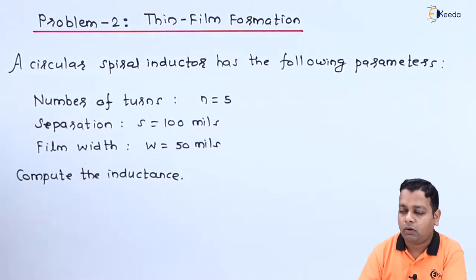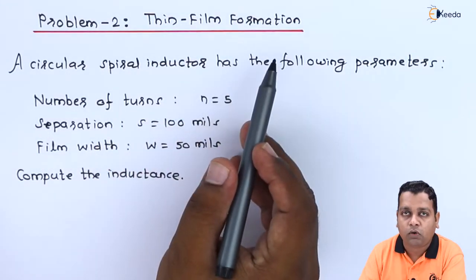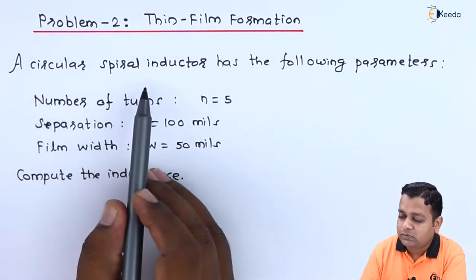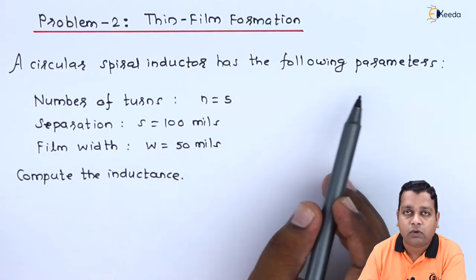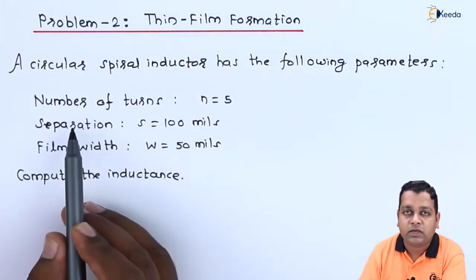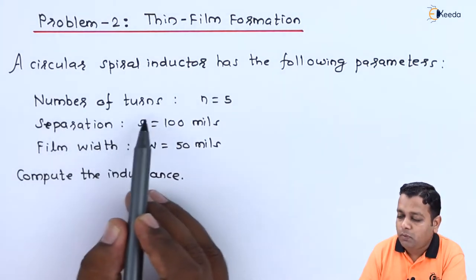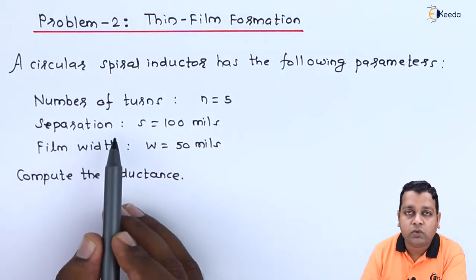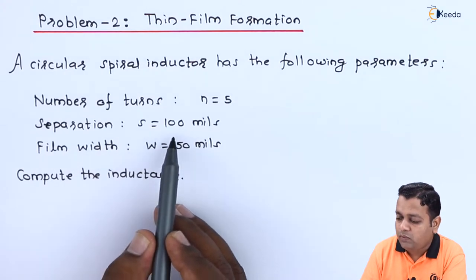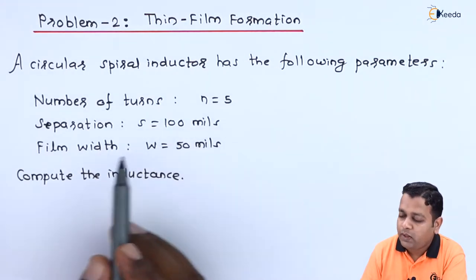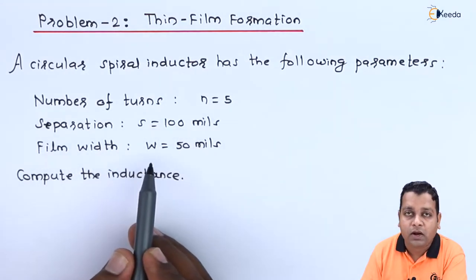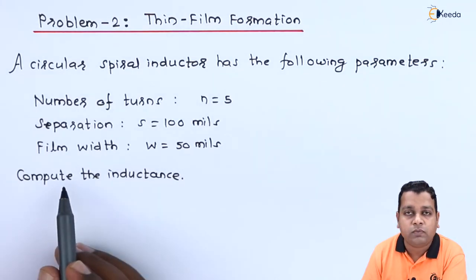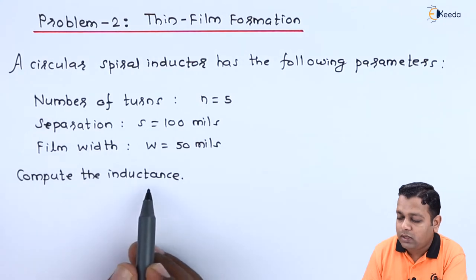We have here problem number two: thin film formation. The problem statement given as a circular spiral inductor has the following parameters: number of turns n = 5, separation s = 100 mils, film width w = 50 mils. We are asked to compute the inductance.